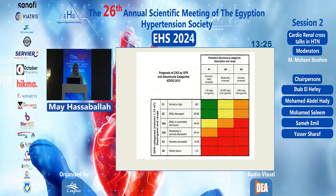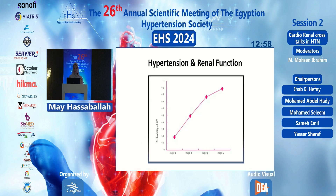You are all aware of the KDIGO guidelines on the prognosis of CKD, where risk depends on GFR and proteinuria. GFR ranges from G1 to G5, and proteinuria categories A1, A2, and A3 correspond to urine albumin-creatinine ratios of less than 30, 30–300, or more than 300 mg/g. The lower the GFR and the greater the proteinuria, the greater the risk of progression to end-stage renal disease.